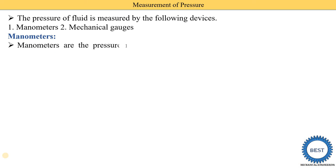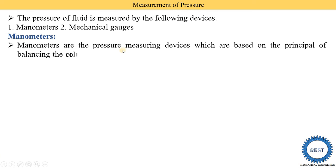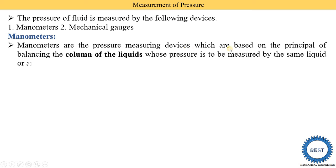Manometers are pressure measuring devices based on the principle of balancing the column of liquid whose pressure is to be measured, using the same liquid or another liquid. A manometer is a type of glass tube — it may be a straight glass tube, a U-shaped glass tube, or an inclined U-tube manometer. Liquids such as mercury or oil are used to measure the pressure of a fluid.